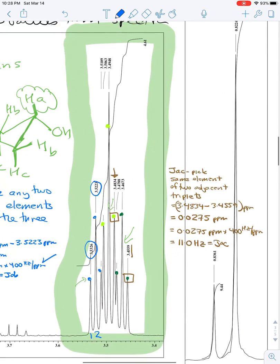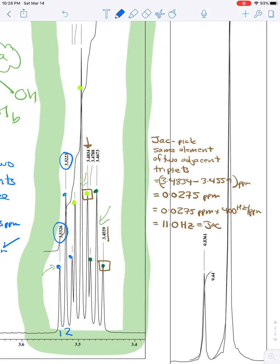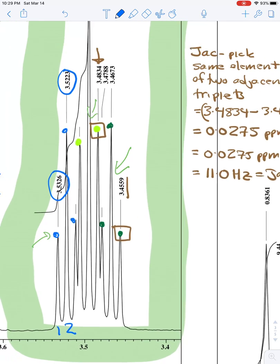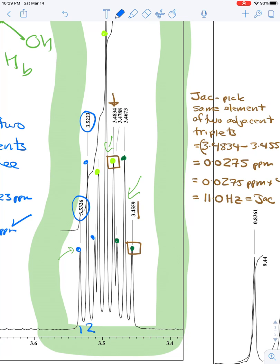So now we're going to do JAC, which again is the larger of the two couplings. And for this, what you want to do is pick the same element of two adjacent triplets. And it really doesn't matter what you do within that. So you could pick two of the big middle ones, I didn't do that because the value is kind of off the screen and makes it harder to see. So what I did is I picked the far right element of the far right triplet, and then the far right element of the middle triplet.